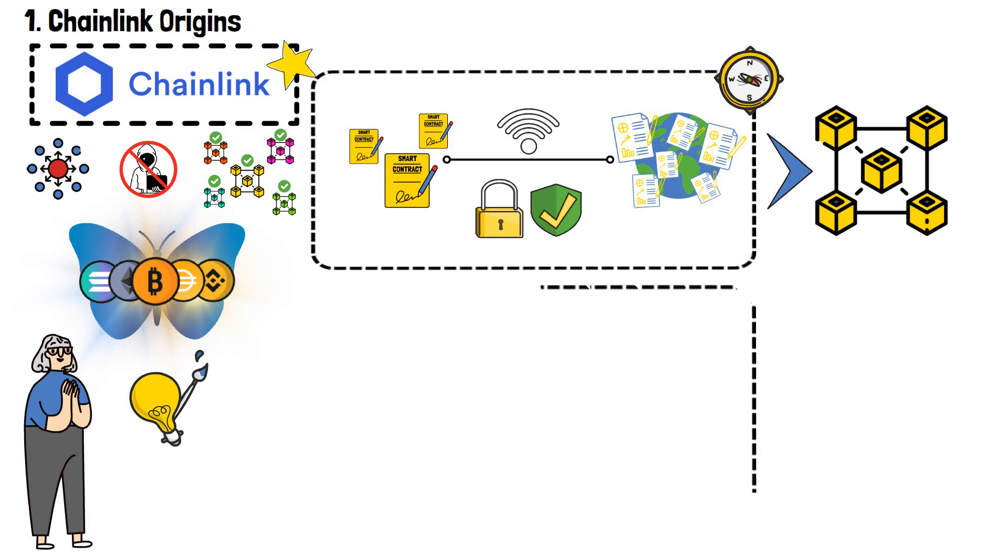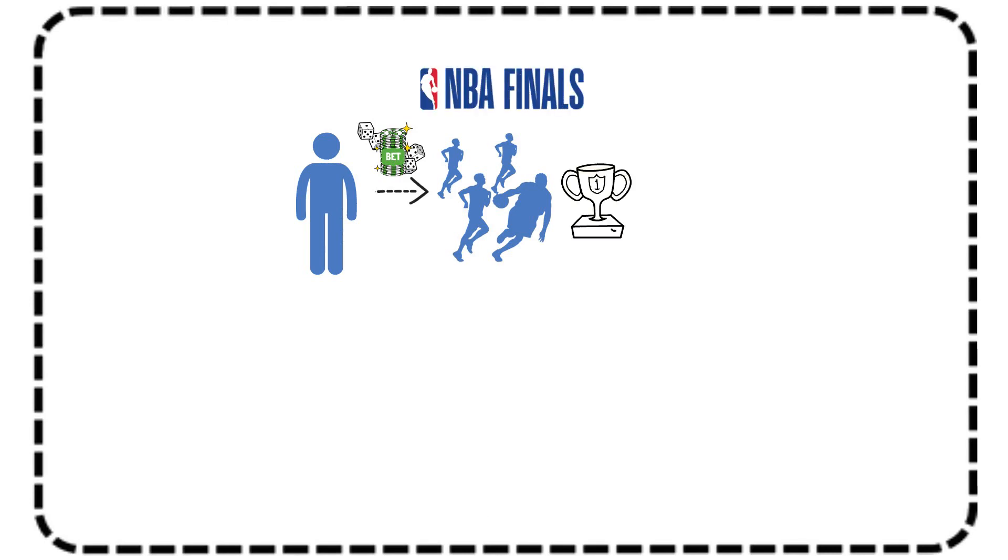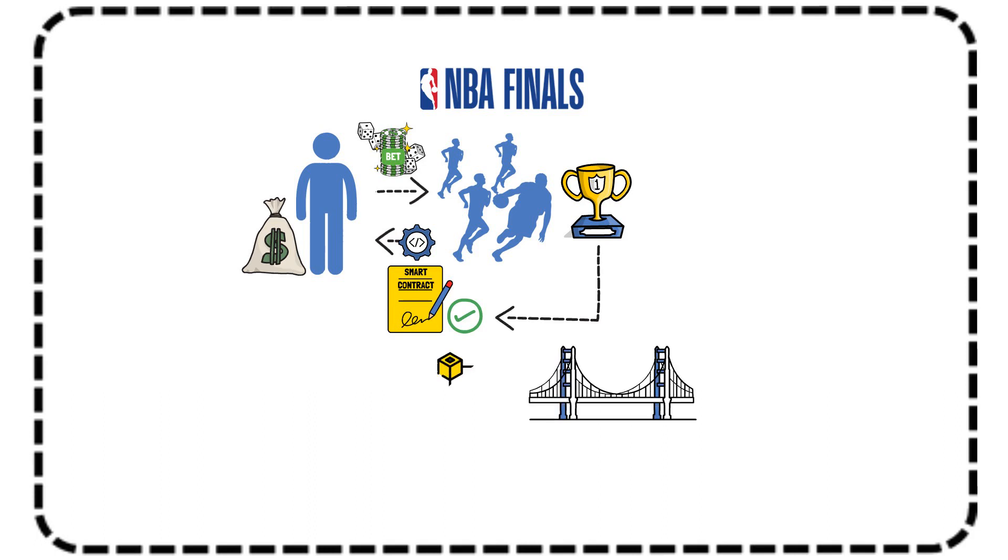Let's illustrate their achievement with a simple, non-crypto-related analogy. Imagine you want to make a bet on your preferred team during the NBA Finals. If your team wins, you collect the winnings as well. And this process is automated via smart contracts. So, in order for the smart contracts to be activated, they have to be informed about the outcome of the game. Thus, the bridge between the blockchain on which the smart contract operates and real-world data, where the actual NBA game takes place, has to be built. That's essentially what Chainlink did.